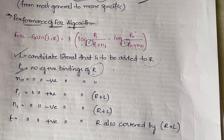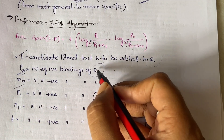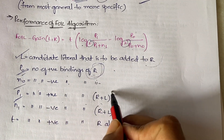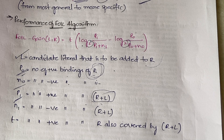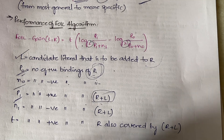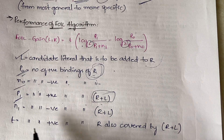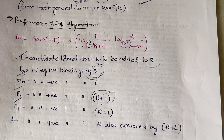p1 is the number of positive bindings of R after adding L (i.e., of R∪L), and n1 is the number of negative bindings of R after adding L. t is the number of positive bindings of R that are also covered by R∪L — the common positive bindings between R alone and R combined with L.